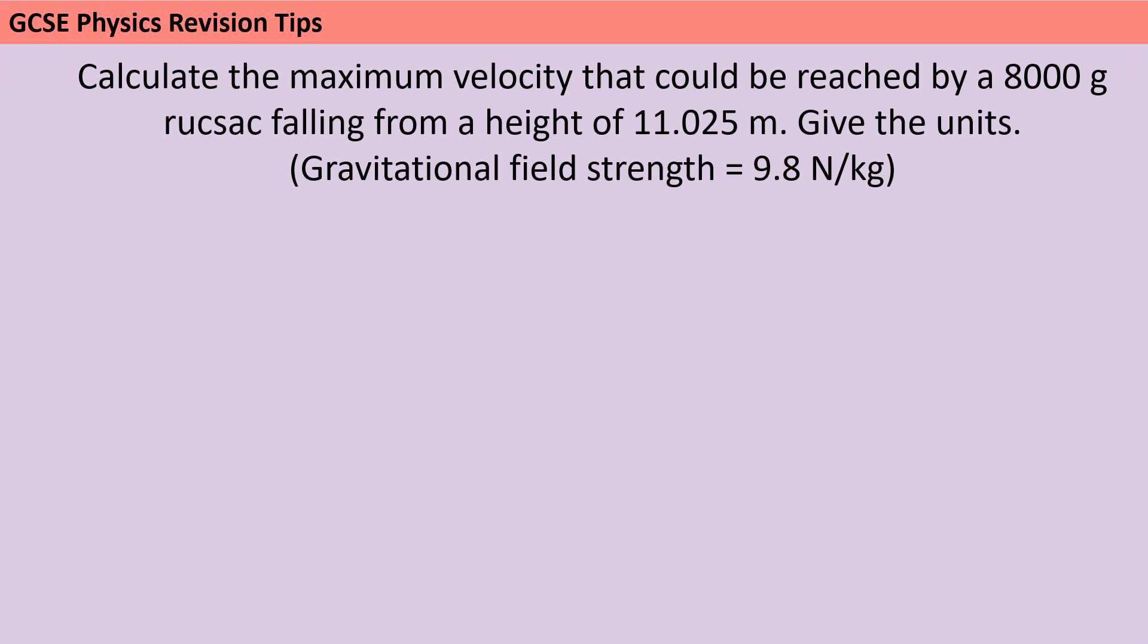In the GCSE physics exams, extended response questions also include these longer calculations where you need to use at least two different equations and put them together in order to solve the problem. Now it's a little bit difficult doing one of these in 2022 because unlike normal, candidates are being given that first equation sheet which normally they would have to memorise and the exam board aren't going to give you credit for identifying an equation from that sheet that you haven't had to recall because it's just written down for you.